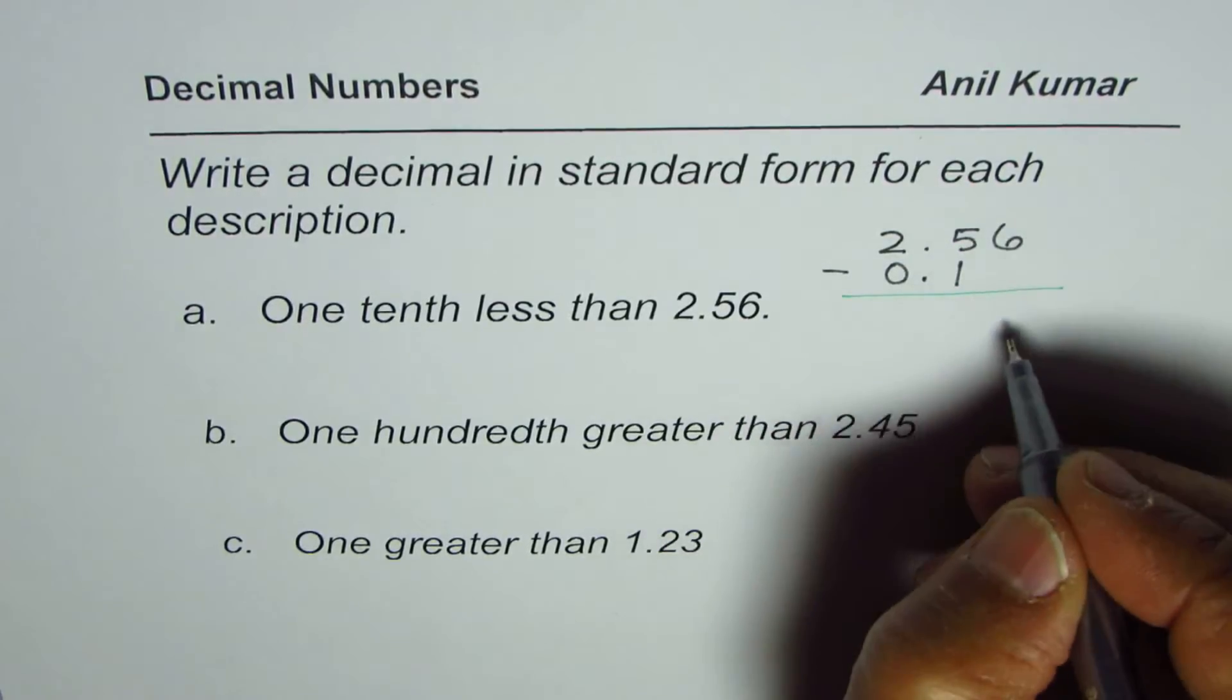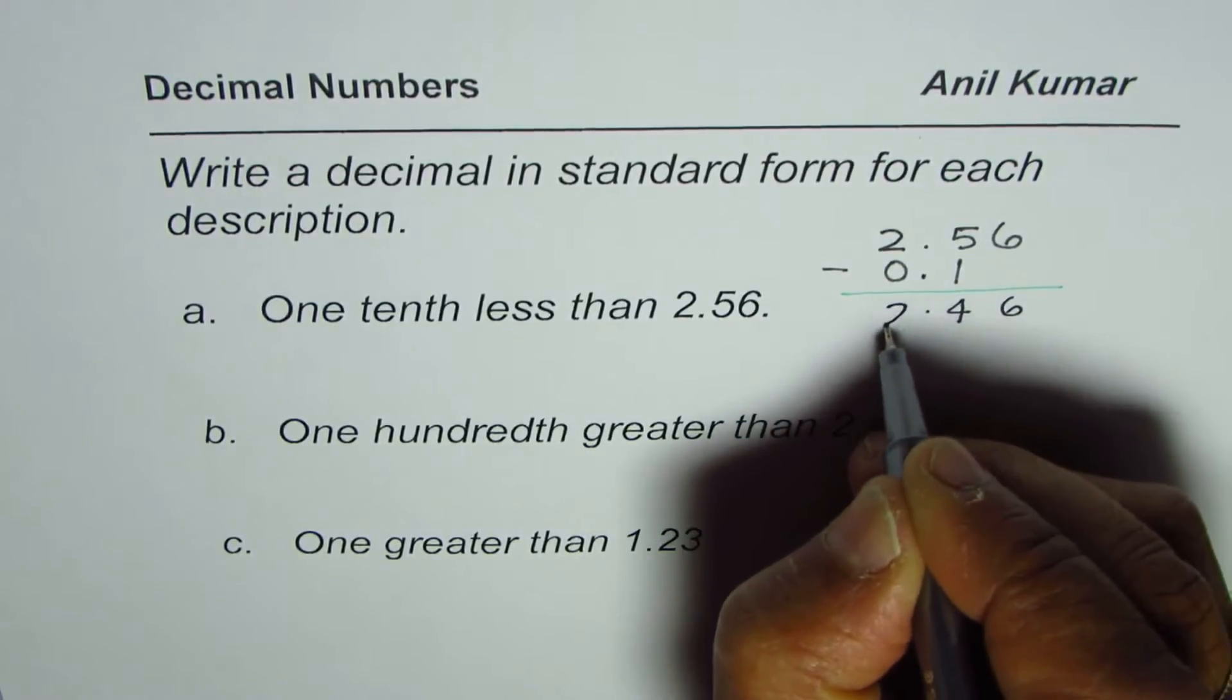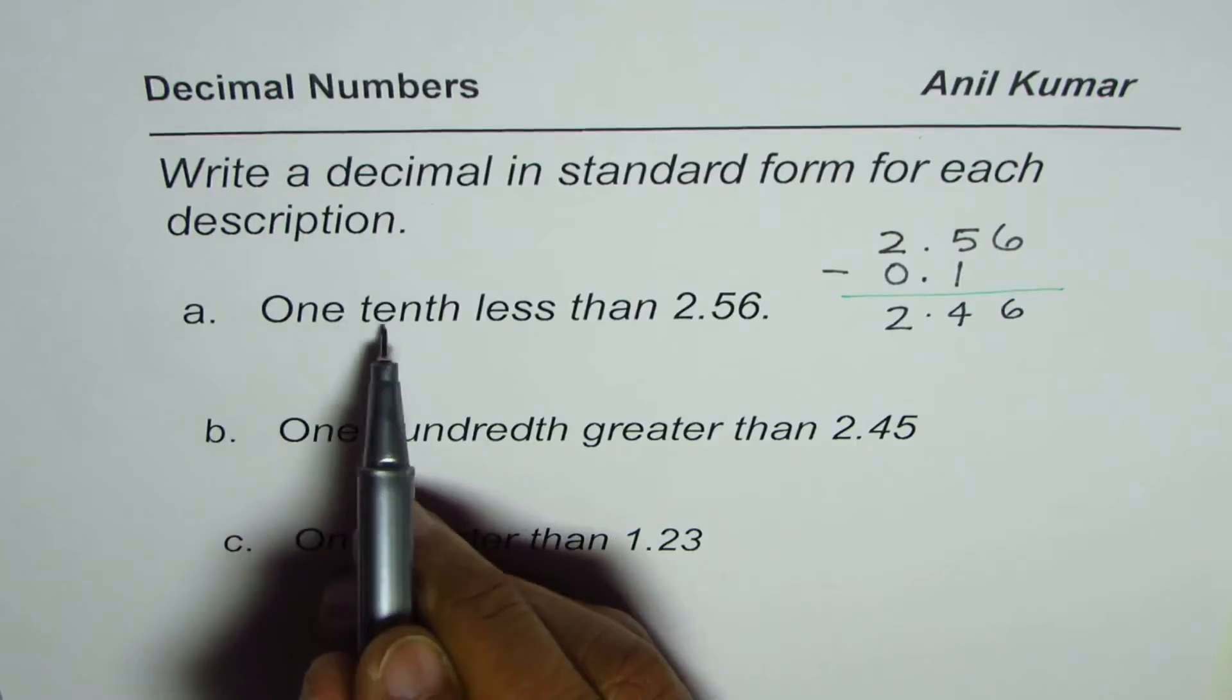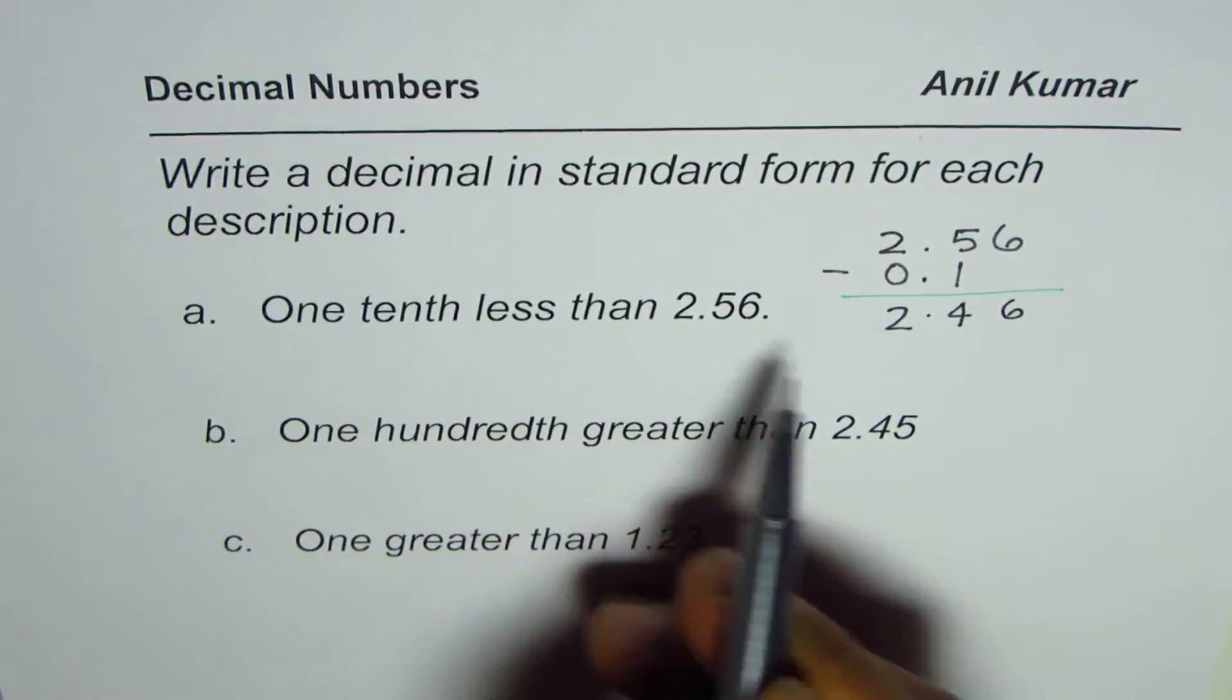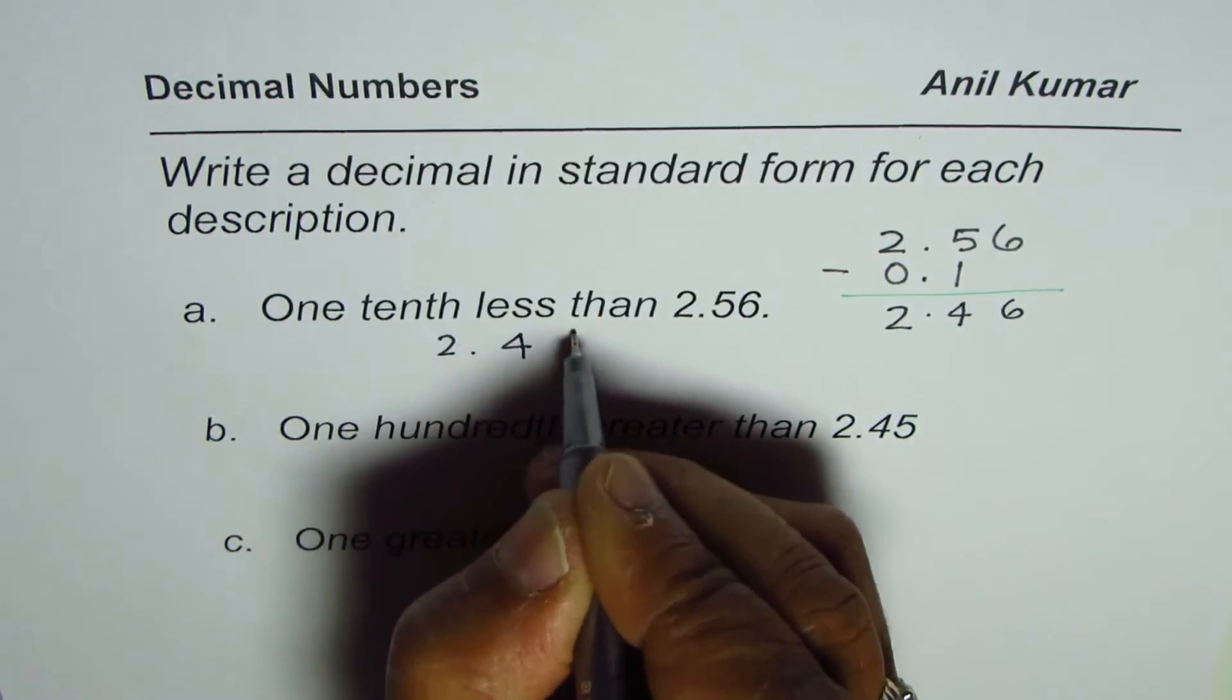So when you take away you get 6. 1 take away gives us 4 and you get 2. So a number which is one tenth less than 2.56 is 2.46. So the answer is 2.46.